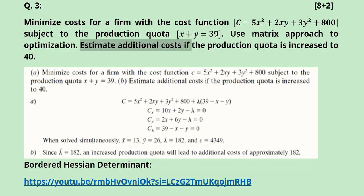The other part of this question was to find the additional cost if the production quota is increased to 40. It is already 39, so there will be one unit increase. For that we can use the value of lambda, because this gives us the marginal effect of the constraint on the objective function. The marginal effect is 182. It means that if the production quota increases by one unit, from 39 to 40, the cost will increase by 182. So you can add 182 to this and find the new optimized value when the production quota is equal to 40. The additional cost is 182.